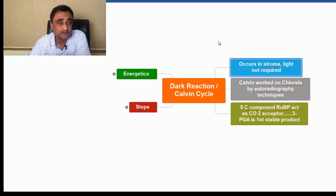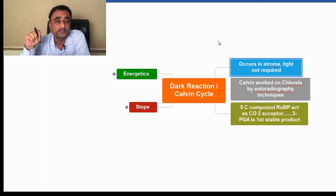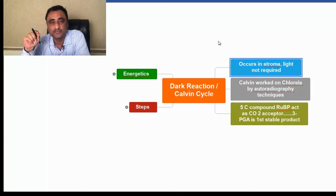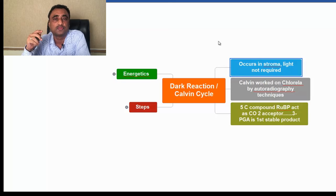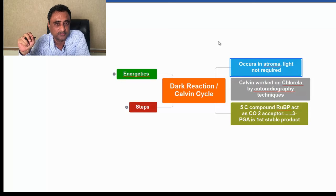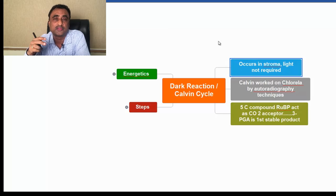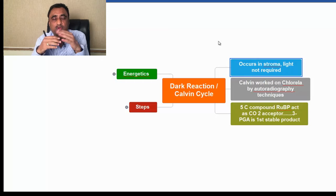The cycle begins with the 5-carbon compound RUBP (ribulose bisphosphate), which acts as a CO2 acceptor. In the presence of enzyme rubisco, it forms a 6-carbon unstable compound which soon splits into 2 molecules of 3-carbon compound called 3-phosphoglyceric acid (3-PGA). Since the first stable product is a 3-carbon compound, we call it the C3 cycle as well.